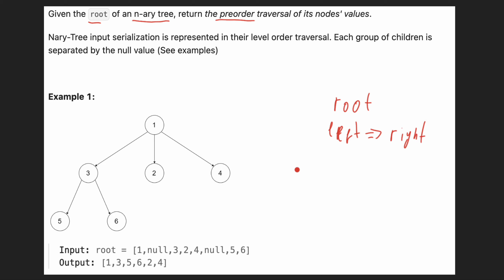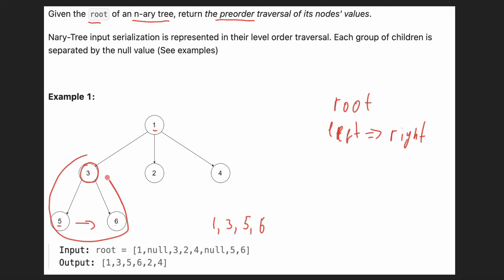Let's take the example we have. Which nodes are we going to visit first? We are visiting our root, so we take value one. Then we visit all children from left to right, so we visit the leftmost child. For that node, we visit its children from left to right — the left child, then the right child with value six.